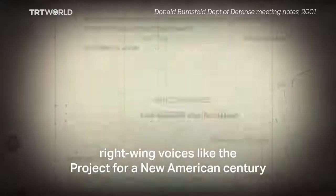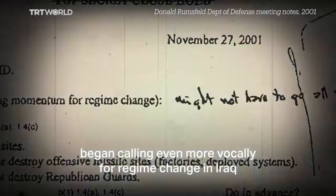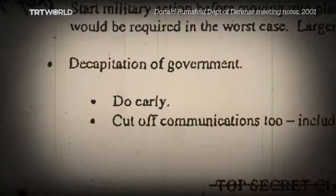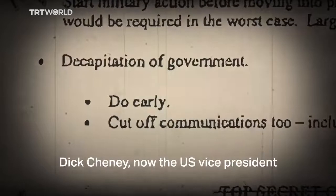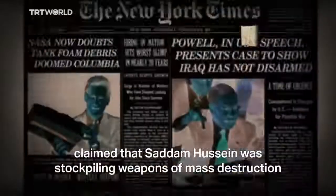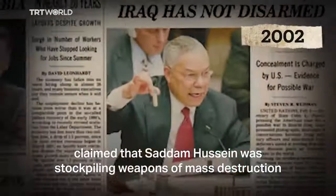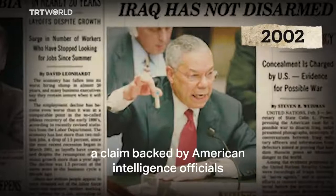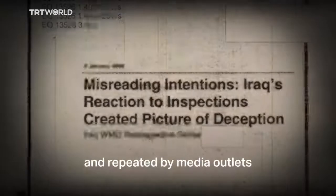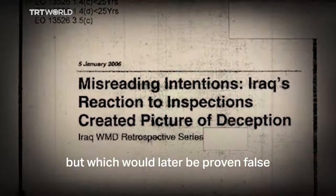Immediately following the 9/11 attacks in 2001, right-wing voices like the Project for a New American Century began calling even more vocally for regime change in Iraq. Dick Cheney, now the US Vice President, claimed that Saddam Hussein was stockpiling weapons of mass destruction, a claim backed by American intelligence officials and repeated by media outlets, but which would later be proven false.